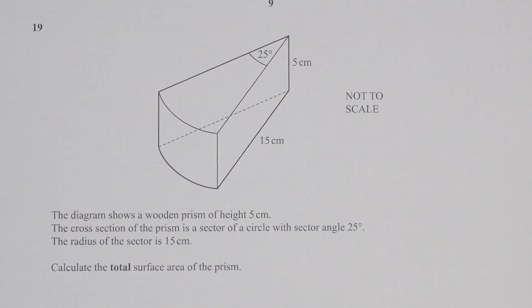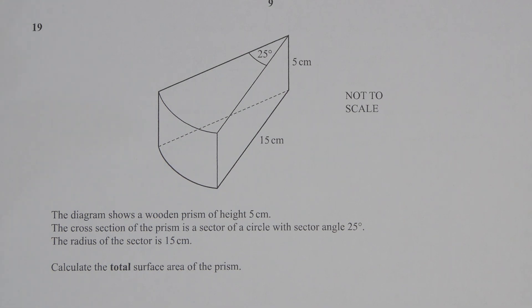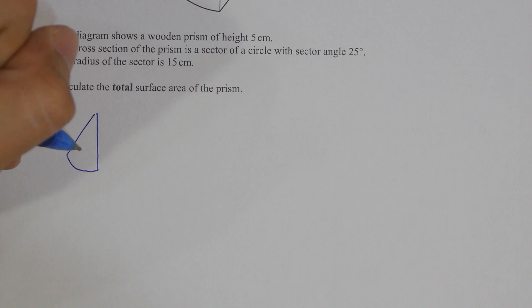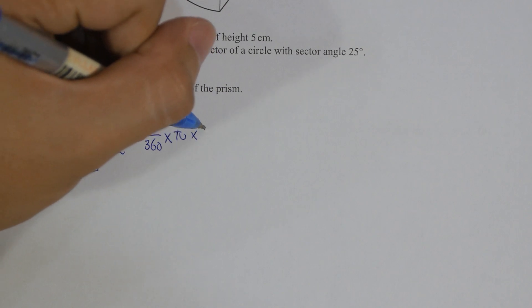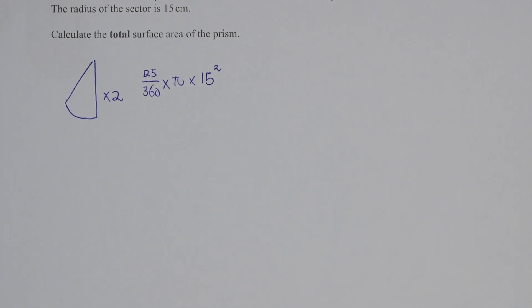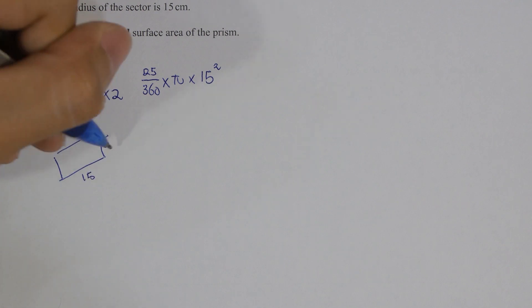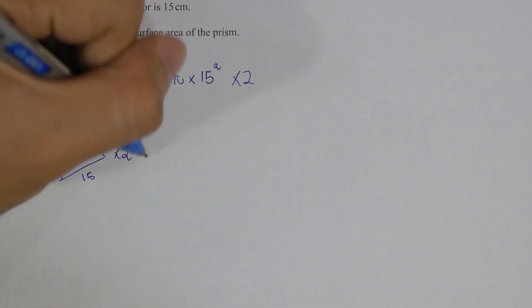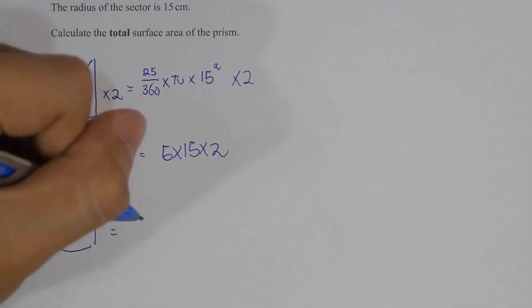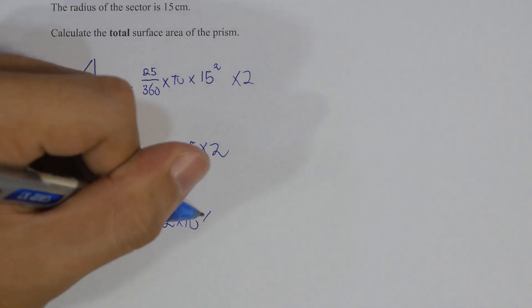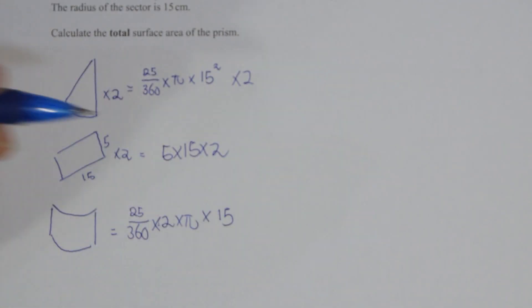For question 19, the keyword is total surface area. I listed down all the possible shapes. The key thing is that for the sector of 25 degrees, the πr² formula is for a full circle, so you are required to multiply by the angle fraction to get the accurate answer. That gives 25 over 360 times π times 15 squared times 2, because there are top and bottom faces.